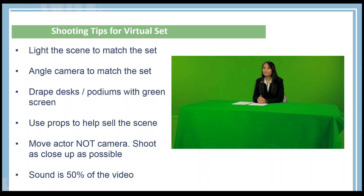Also, shoot as close up as possible. You can lose quality when you zoom in on an image and start to pixelate. If you start by shooting your video as close as you can to your subject — and if you need the full body, get as close as you can so they fill the frame — then later if you need to zoom, it's easy to zoom out. That's why you want to shoot as close as possible while still getting the angle you want.